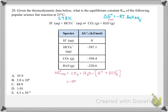We can say our delta G for the reaction equals our products — CO₂ plus the value for water — minus the value for our protons and for our bicarbonate. For CO₂ that's minus 394.4 kilojoules per mole, plus water which is minus 228.6 kilojoules per mole, minus both the proton value of zero and bicarbonate which is minus 587.1 kilojoules per mole. That value comes out to negative 35.9 kilojoules per mole.